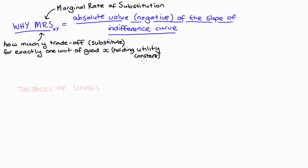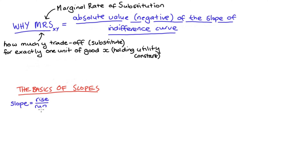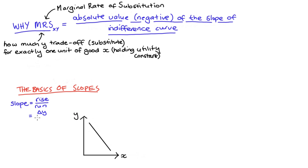I'm going to start right at the beginning, just with the basics of our slope. We know that the slope of a line is equal to rise over run. So if we had this line here — I'll use a straight line to begin with so the slope is constant — the slope of this line will be equal to the change in y, that's our rise, the change in the vertical axis variable, divided by the change in x, that's our horizontal axis variable, that's our run.